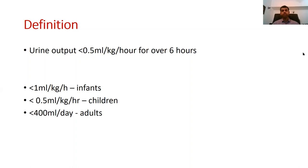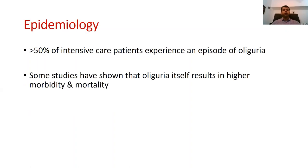This definition differs depending on the age of the person — the definition is different for infants, different for children, and different for adults. In intensive care patients, more than 50% have at least one episode of oliguria, and some studies have shown that oliguria itself results in higher morbidity and mortality, making it very important to identify.